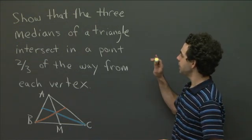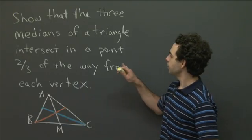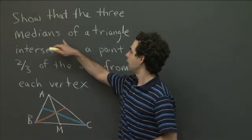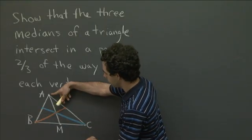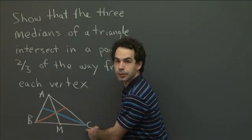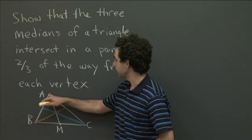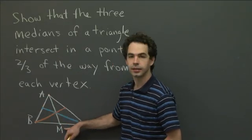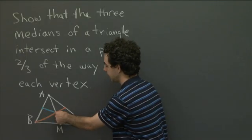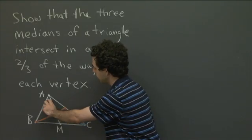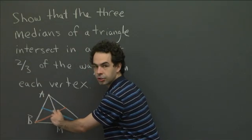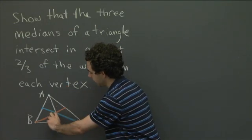What I'd like you to do is show that the three medians of a triangle intersect at a point, and the point is two-thirds of the way from each vertex. Let me just remind you of some terminology. In a triangle, a median is the segment that connects one vertex to the midpoint of the opposite side. So here, this point M is exactly halfway between B and C. Every triangle has three medians, one from each vertex connected to the midpoint of the opposite side. What I'm asking you to show is that these three medians all intersect in the same point, and also that this point divides the median into two pieces, and the big piece is twice as large as the small piece.